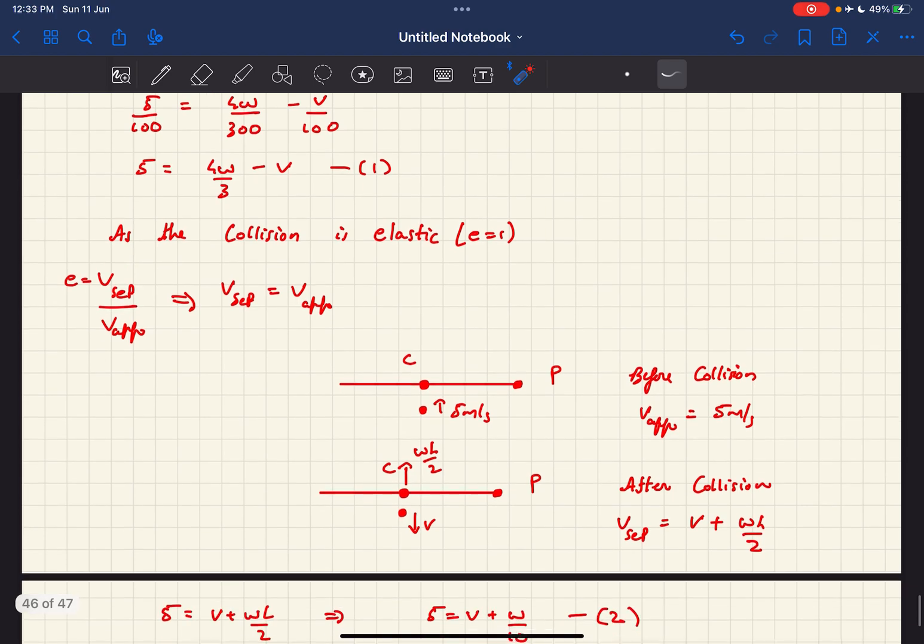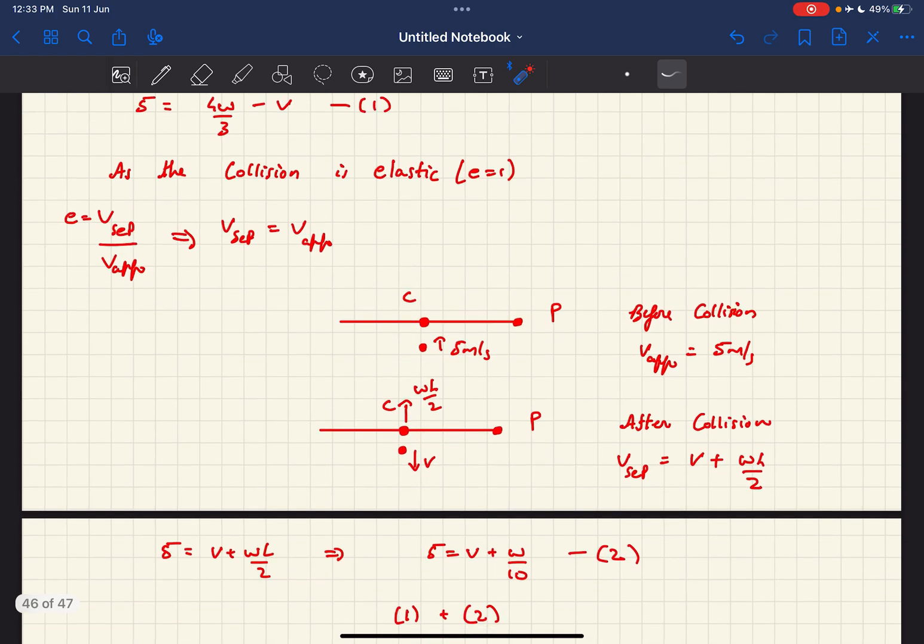Now for the second equation, we can use the fact that the collision in this question is elastic. And for all types of collisions, we define a quantity called coefficient of restitution, which is basically the ratio of the separation velocity and the approach velocity between the two bodies that are going to collide. So as the collision is elastic, we can say the separation velocity and the approach velocity are the same.